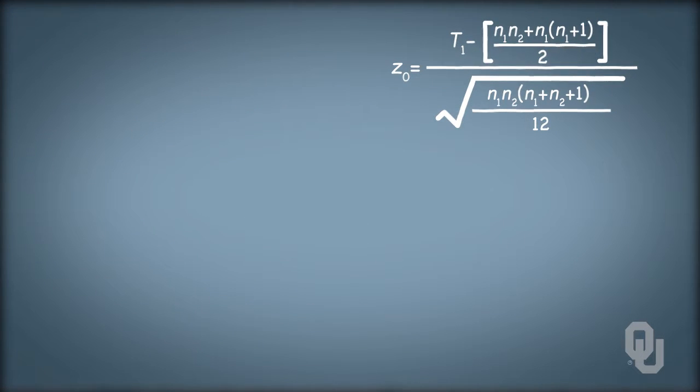And note that we only use T1 in the test statistic, because that's all we need. The sum of the ranks T1 plus T2 is, by definition, n1 plus n2 times n1 plus n2 plus 1 divided by 2. So if the sum of the ranks T1 is large, that means that T2 must be small, and vice versa. So even if only T1 appears in the test statistic, we're drawing conclusions about both populations relative to each other.